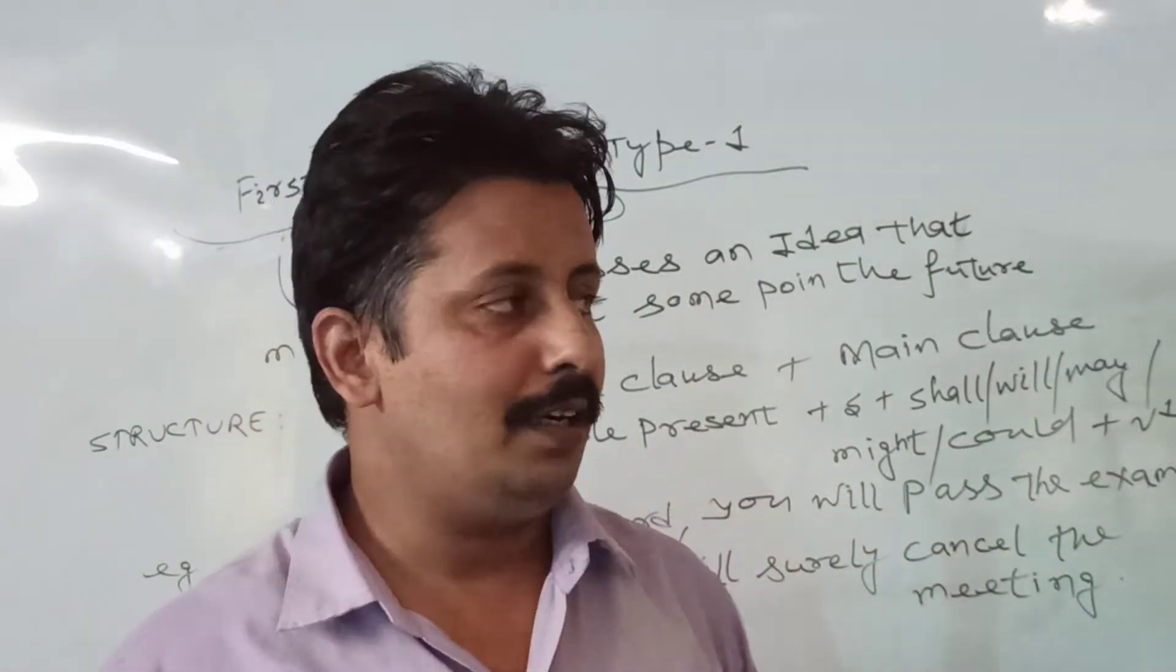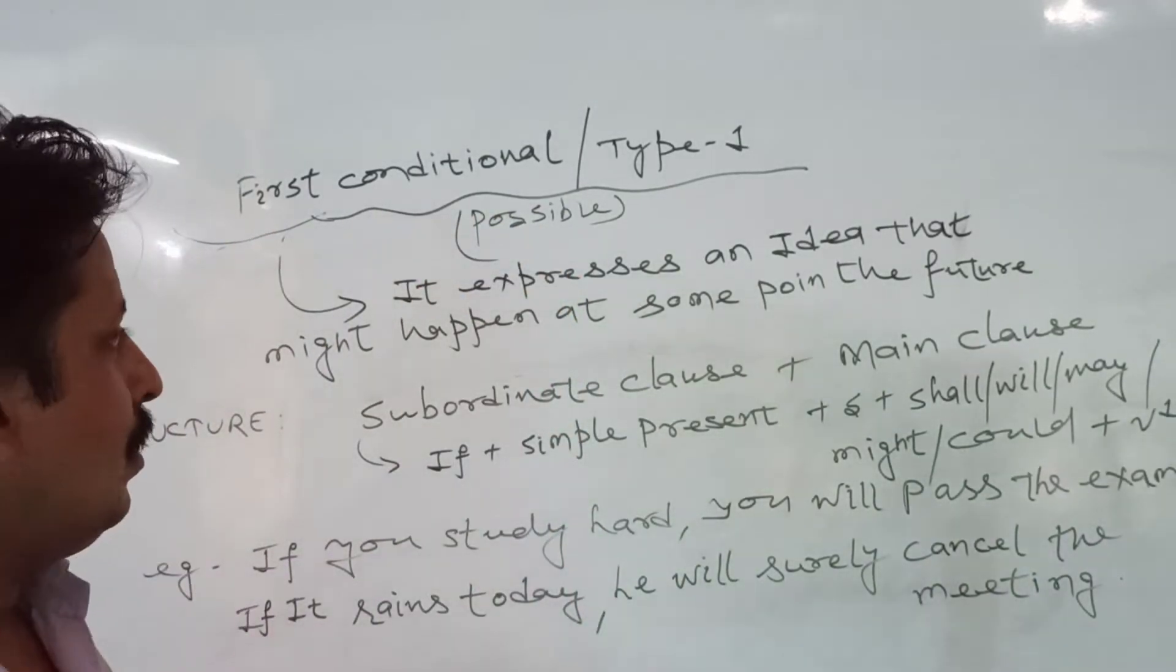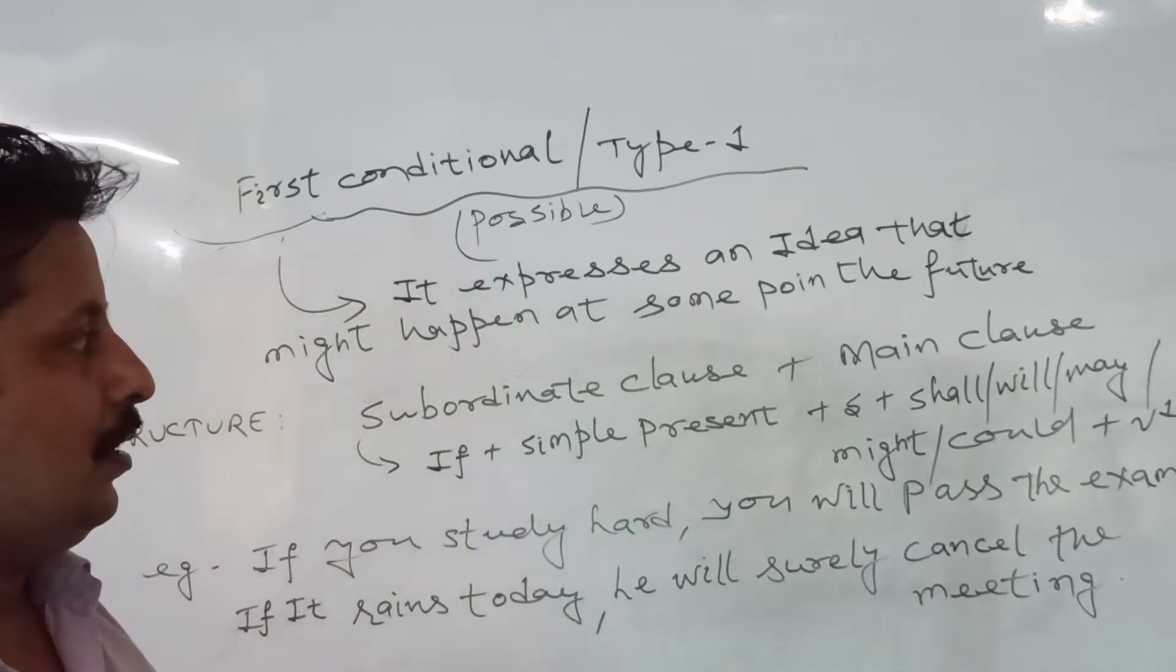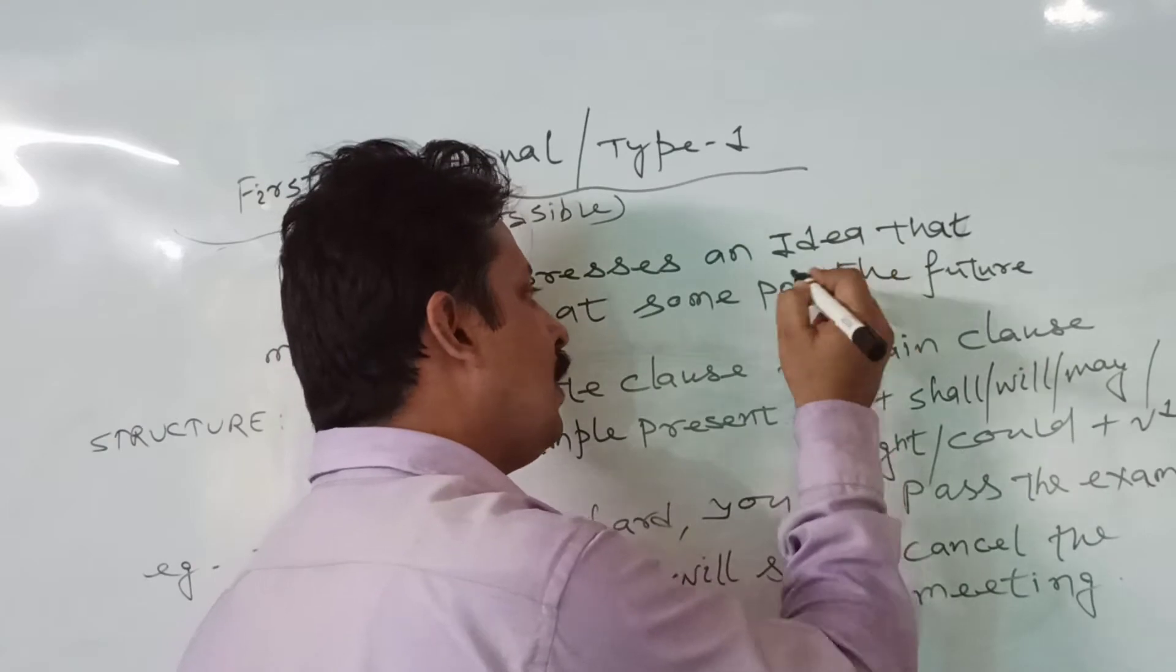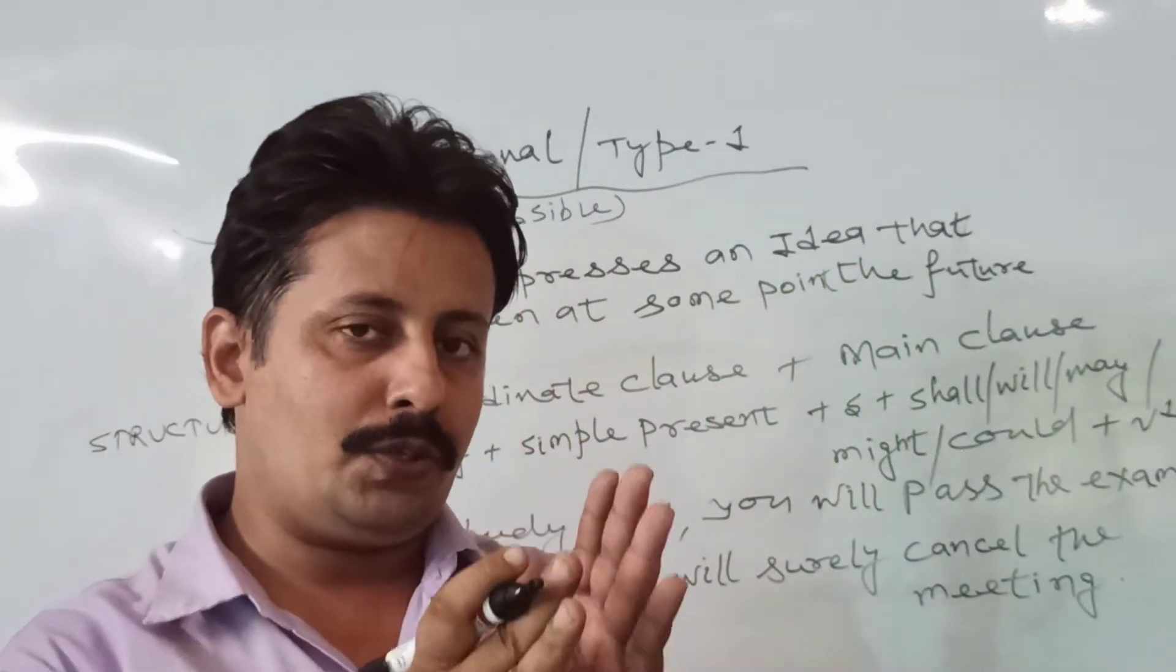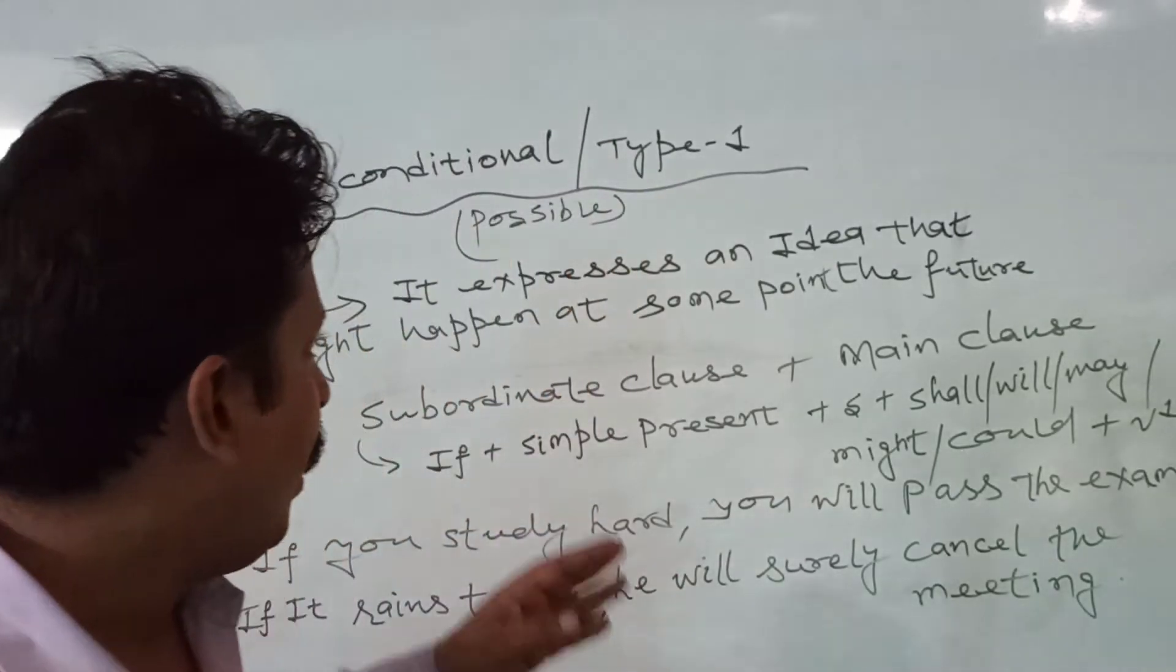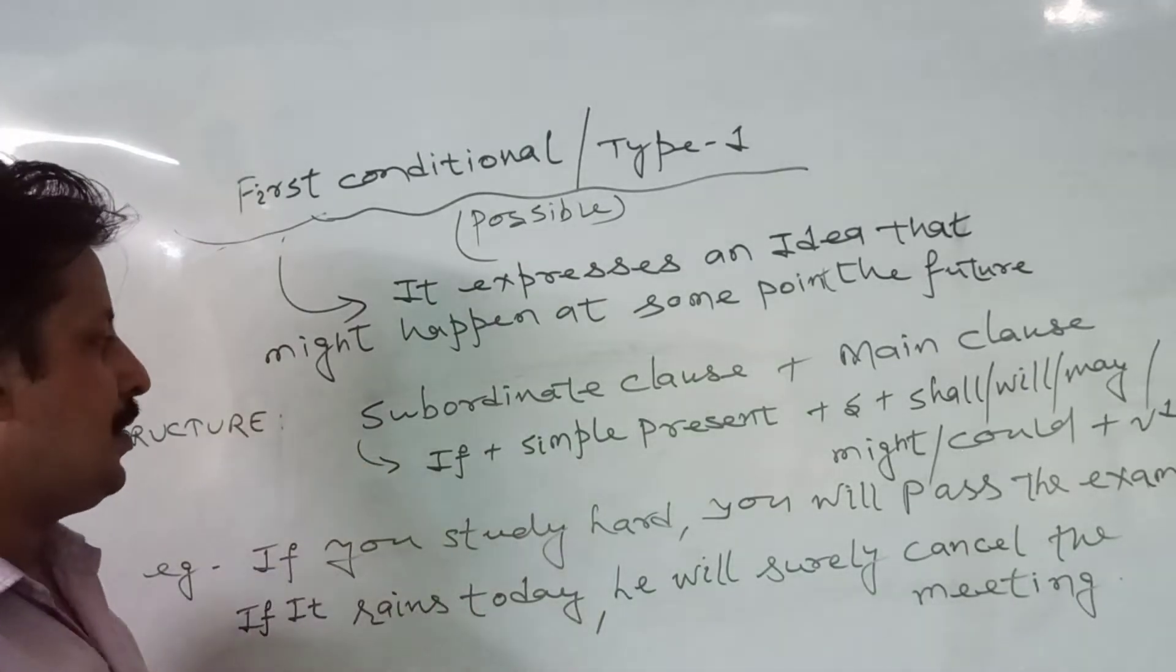Now see the first conditional, that is type one. Here it expresses an idea that might happen at some point in the future. It will surely show something to happen in future. It means we can see a possible condition here.